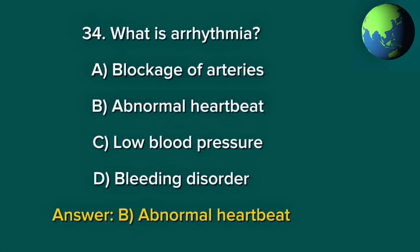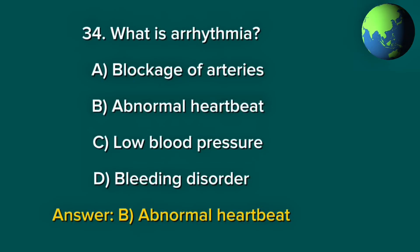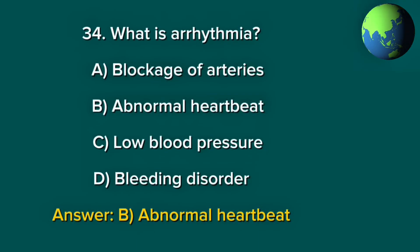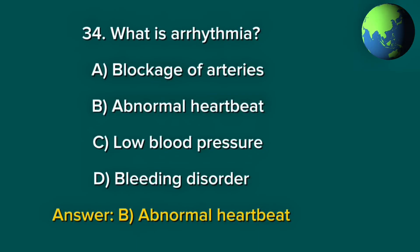Question 34. What is arrhythmia? A. Blockage of arteries. B. Abnormal heartbeat. C. Low blood pressure. D. Bleeding disorder. Answer: B. Abnormal heartbeat.